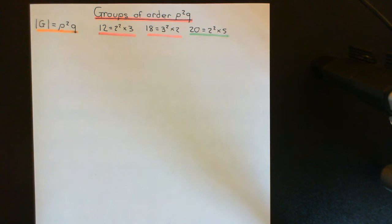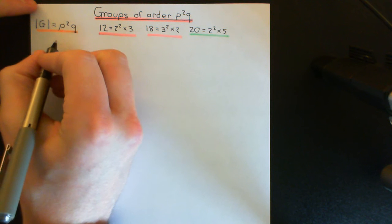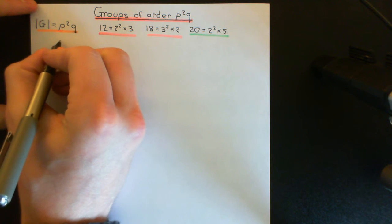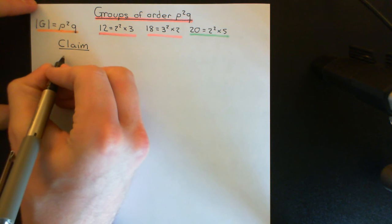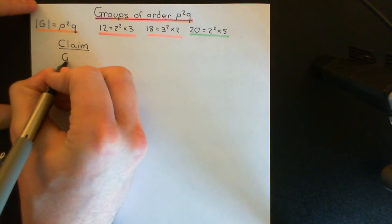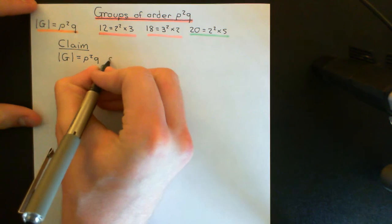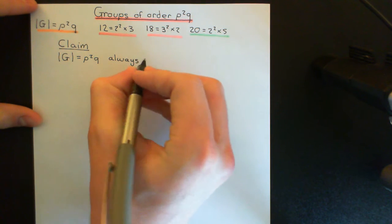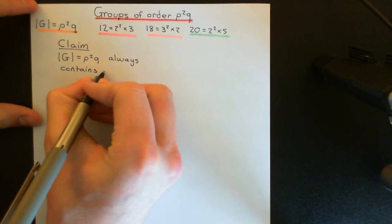Groups of those orders are what we're going to be making theorems about in this video. There's one great theorem I want to show: groups of order p squared q always contain a normal Sylow subgroup. So here is the great claim — this finite group of order p squared times q always contains a normal Sylow subgroup.